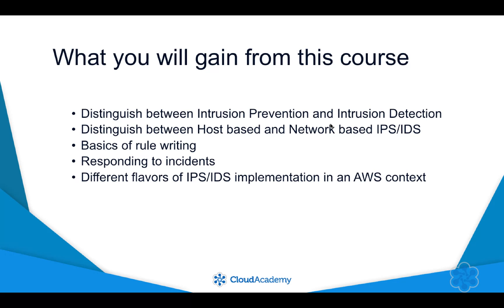The meat of this course will focus on the different AWS architectures available and how the placement of the IPS and IDS devices will vary with each one. At the end, you will have a fundamental understanding of how to place the IPS and IDS given any non-complex network architecture. We will also focus on the partner solutions available for IDS and IPS on AWS.